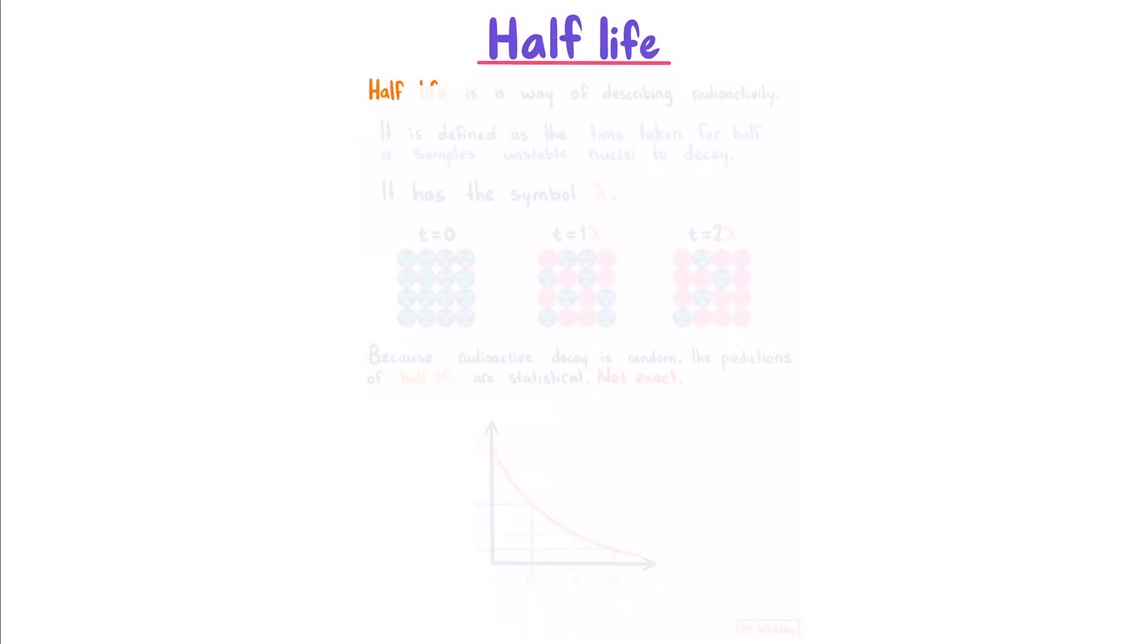Half-life: Half-life is a way of describing radioactivity. It is defined as the time taken for half a sample's unstable nuclei to decay. It has the symbol lambda. So if at time equals zero we have 16 radioactive particles, after one half-life, roughly half of these will have decayed.